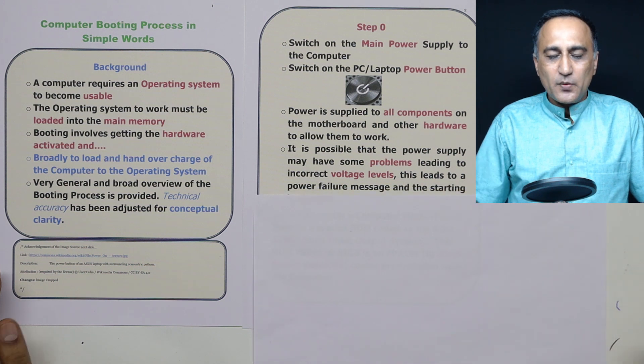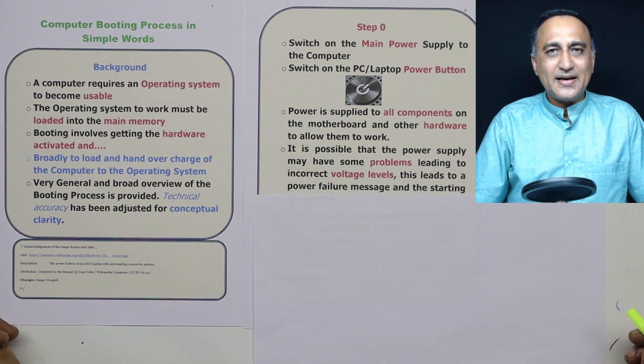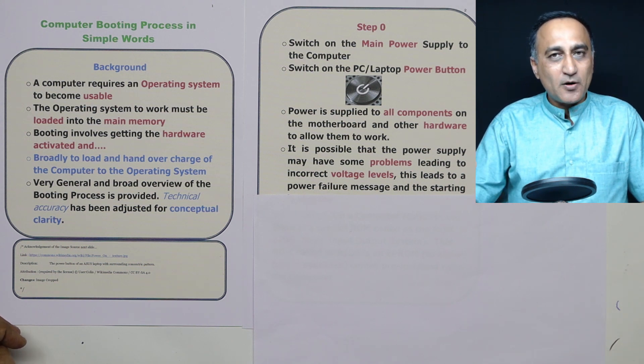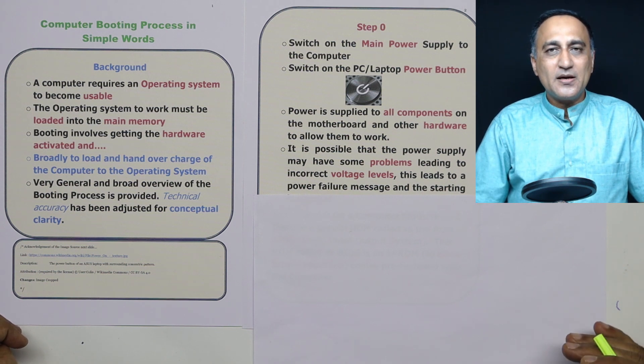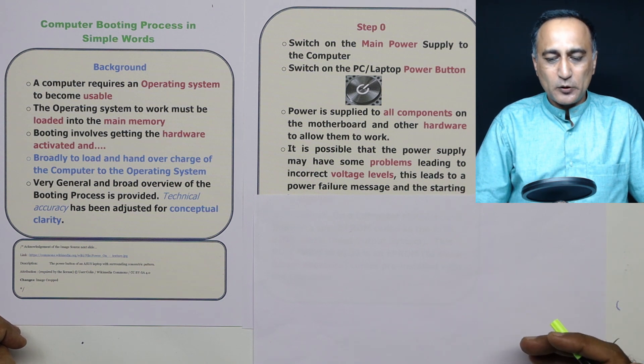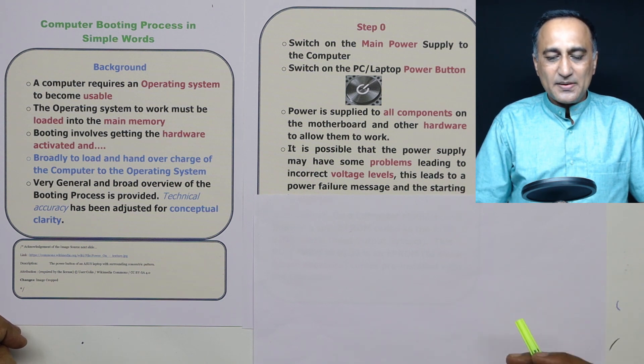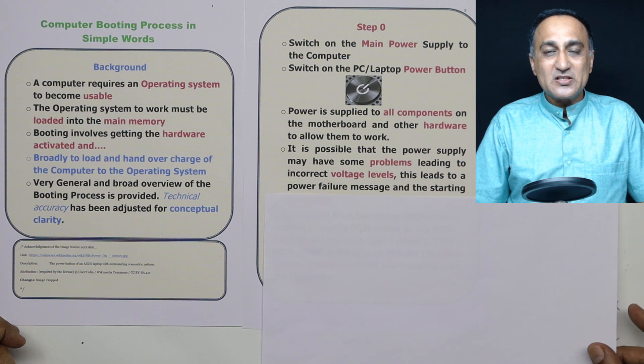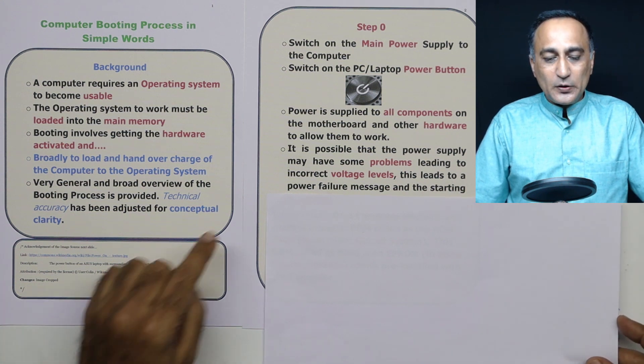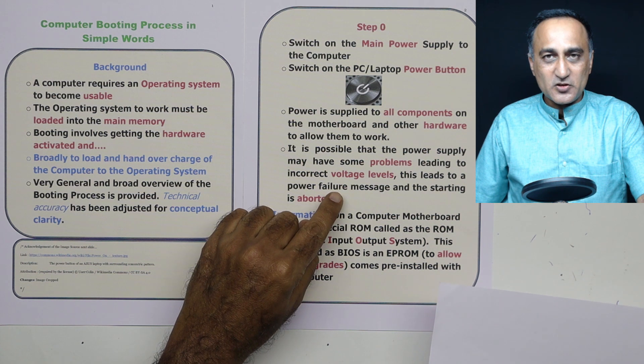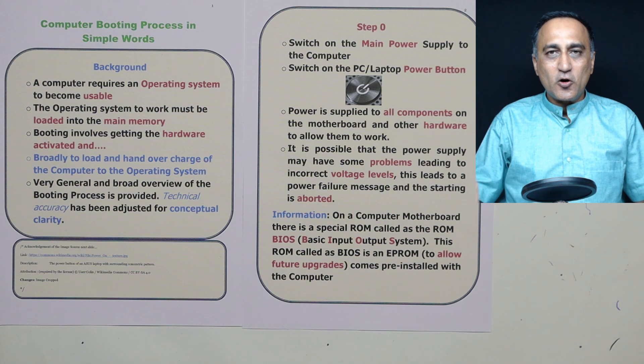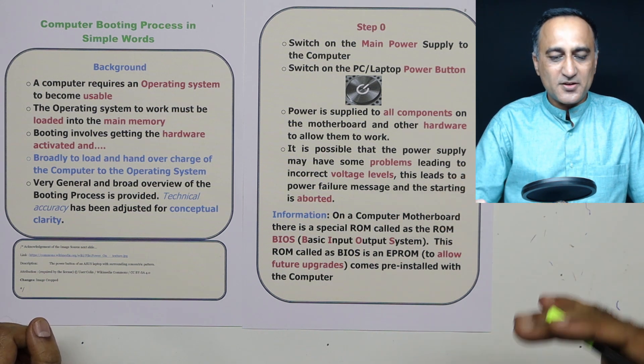Now, at times when you switch on the power, it is very much possible that the power supply is not of a suitable quality in the sense, the voltage may be low, there may be a lot of power fluctuation, there may be some problem in the quality of the power supply being supplied to the PC or the laptop. In this case, what happens is the internal circuitry will detect that the power supply is not of the required quality, it will signal a power failure message and the starting process is aborted or halted at this point of time because without power, it doesn't make sense to continue.